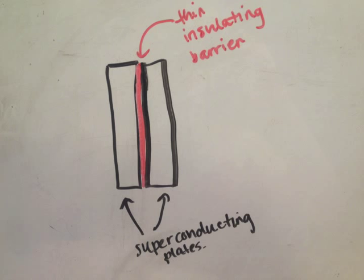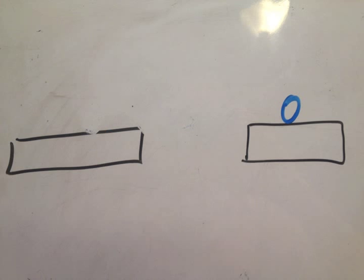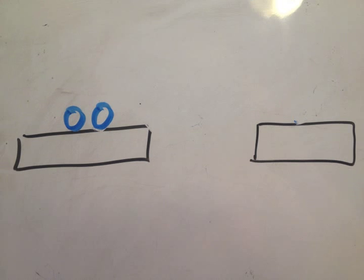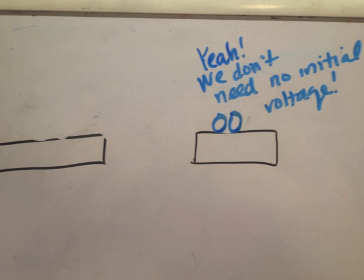In conclusion, a singlet or non-superconductive electron requires an initial voltage before it will form a current and cross the gap. However, Cooper paired electrons do not require an initial voltage before they will form a current and cross the gap due to their interlocking phases.